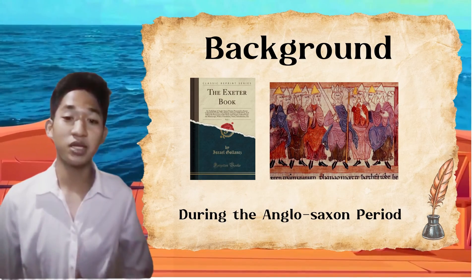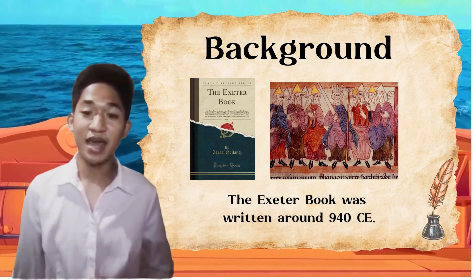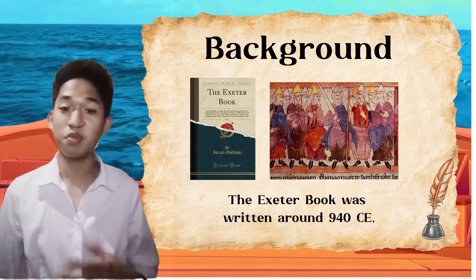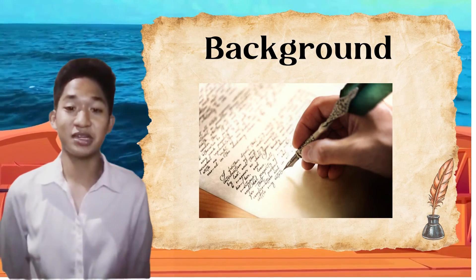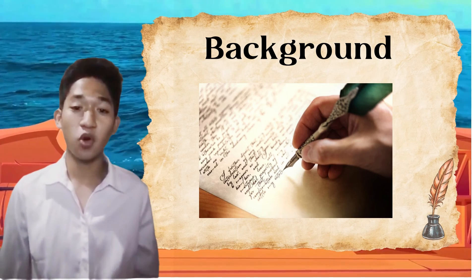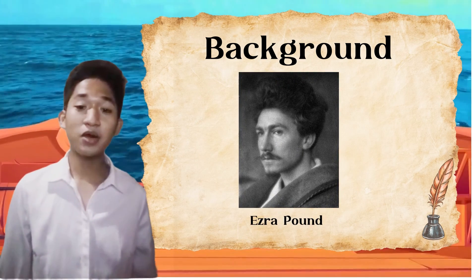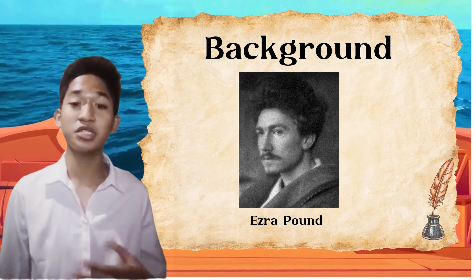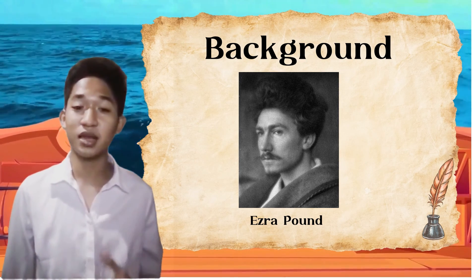The Exeter Book was written around 940 CE, implying that the poem was written around 450 CE. Many other writers have created their own translations of the poem over the years, including Ezra Pound. Pound's translation strips the original poem of many religious elements.